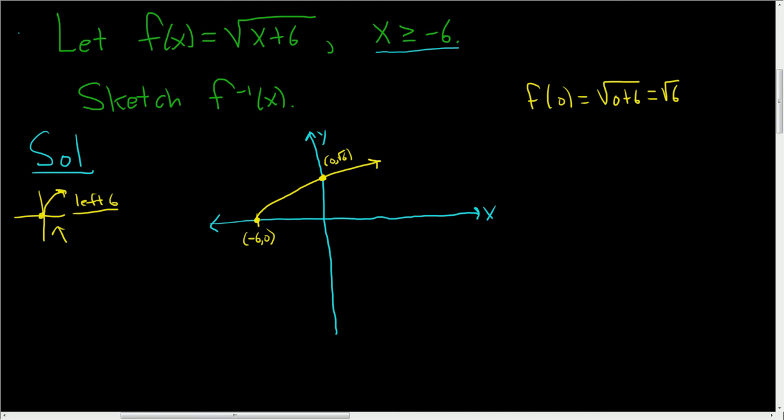Now to find the inverse function, we're going to use the fact that a function and its inverse are symmetric about the line y equals x. So that's a pretty good line there.